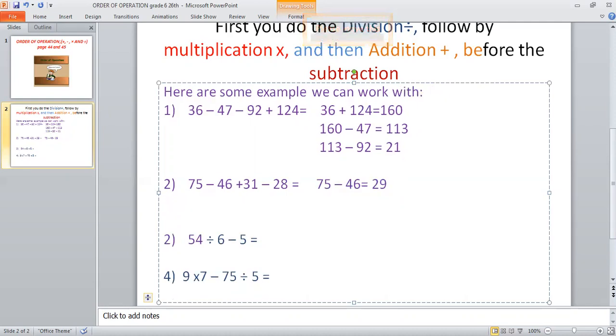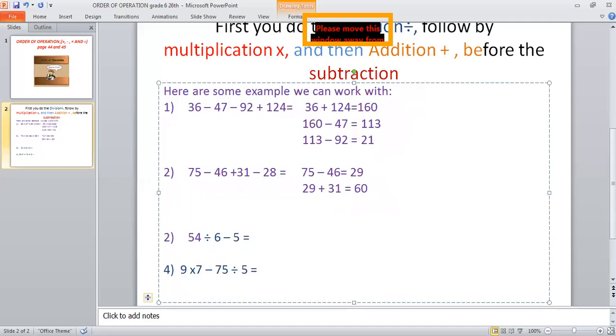Then we're going to take 29 plus 31, which is going to give you 60. And then, you take 60 minus 28. Your answer is going to be 32.